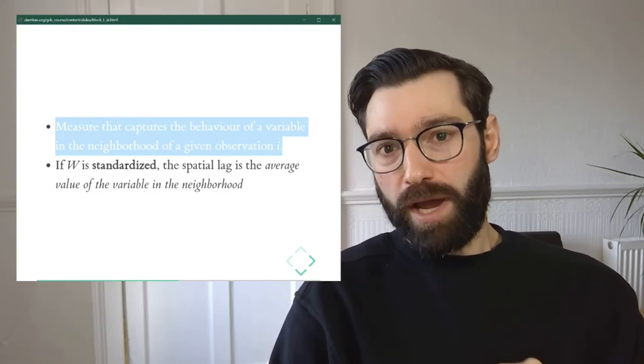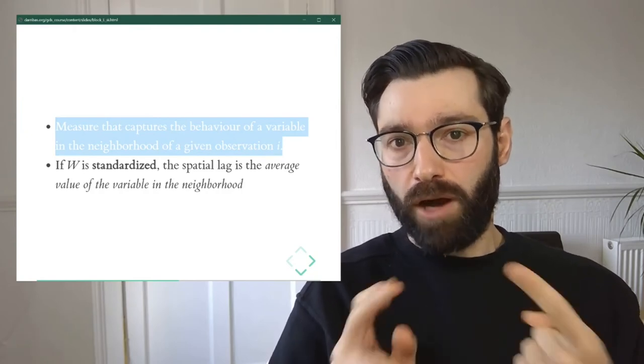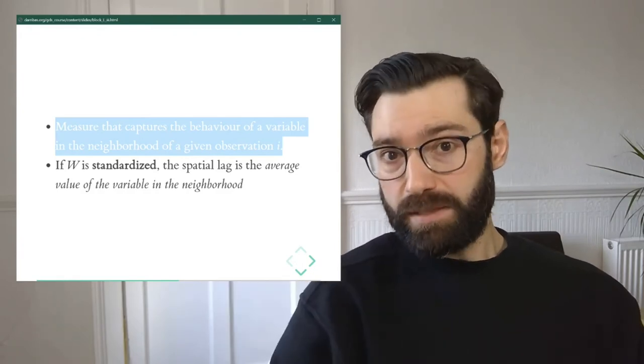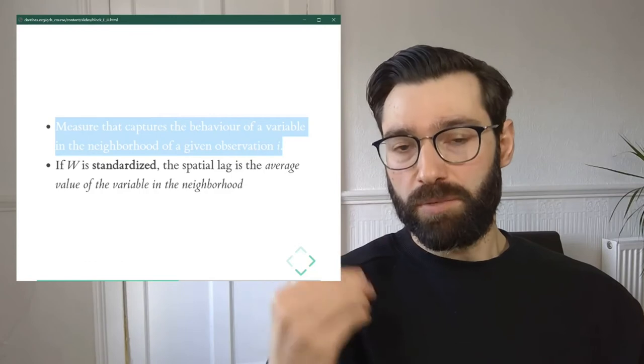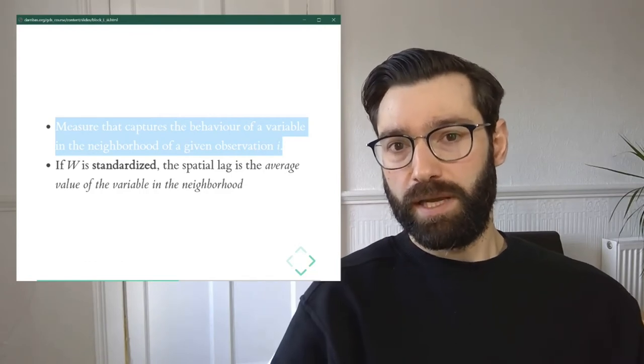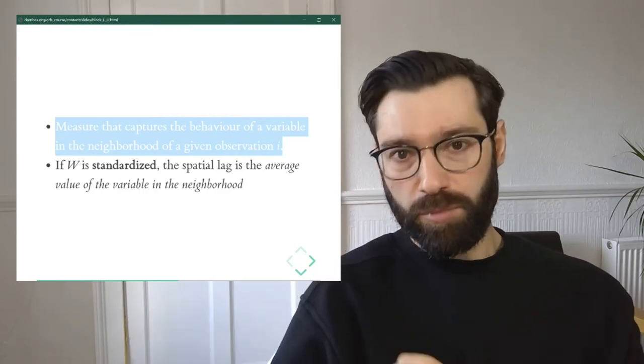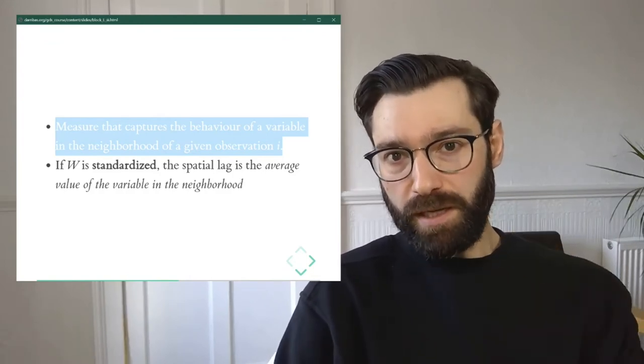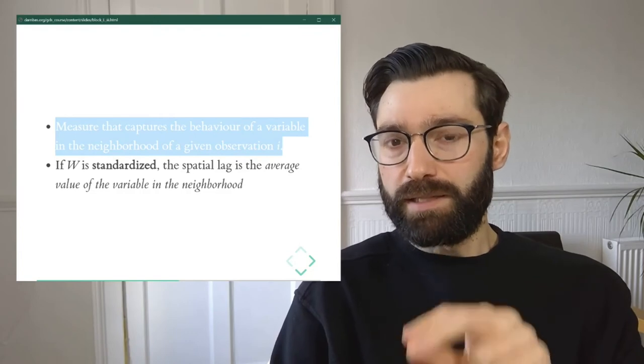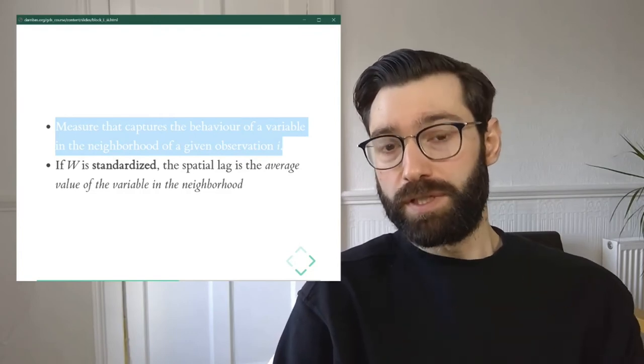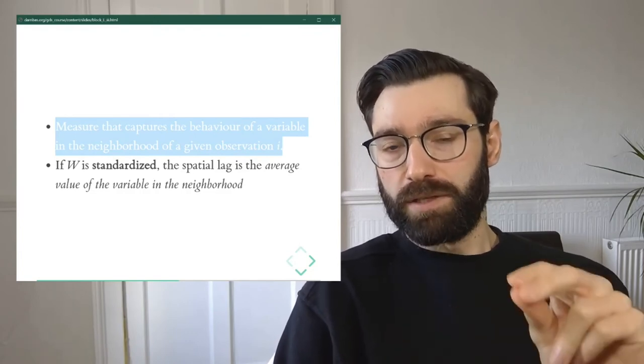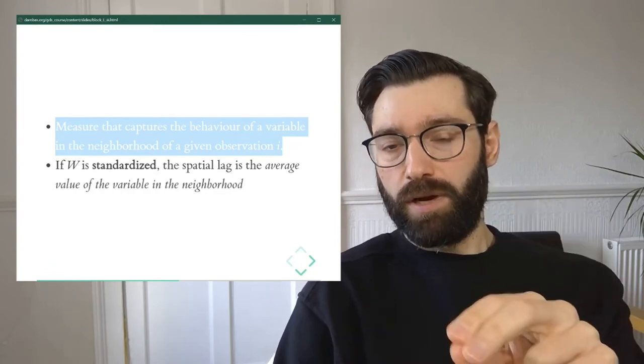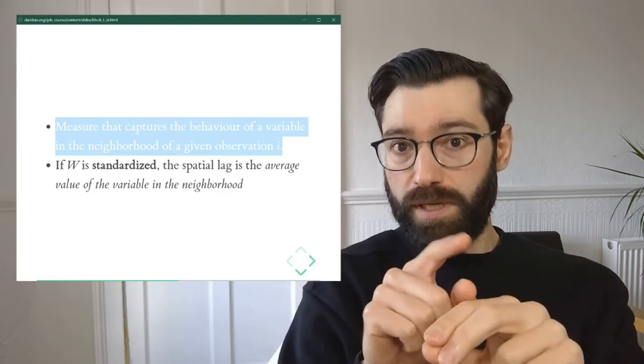One, it's expressed in a very common and familiar format for statistical methods. It's just a list of measurements, one for every observation that we have in our dataset. That could be for every area, for every polygon, for every point. The second one is that the information contained here is not exactly the same as the one we have with the original variable y. It contains information about how that variable y behaves not at a given location, but in the surrounding, in the neighbors.